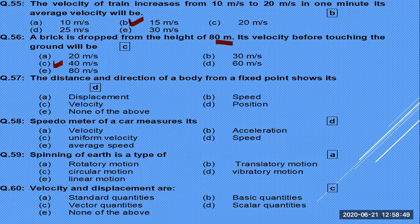The formula to calculate time is Vf = Vi + at. If you put in the values, you get the time. The distance and direction of a body from a fixed point shows its position.